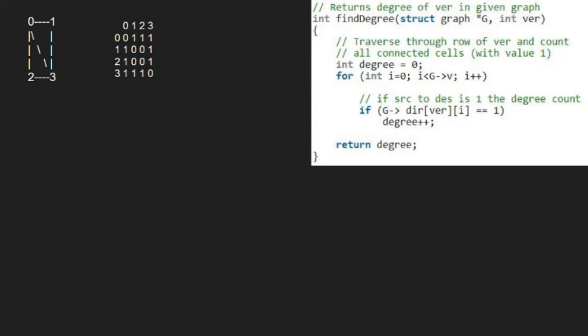We pass the graph G and the vertex for which we have to find the degree to define degree function. Let us assume that we have to find the degree for vertex 0. So, ver will be equal to 0.